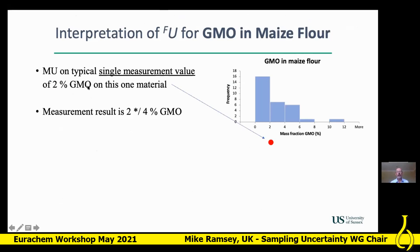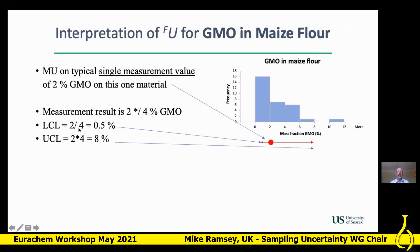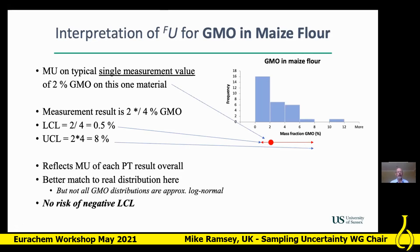Applying this uncertainty factor to a single measurement result: if the result is 2% GMO, the measurement result is expressed as 2 ×÷ 4% GMO. The lower confidence limit is 2 ÷ 4 = 0.5%, and the upper confidence limit is 2 × 4 = 8% GMO. This is a very asymmetric confidence interval. The measurement uncertainty reflects the uncertainty of each PT result and matches the real log-normal distribution, with no risk of a negative lower confidence limit.